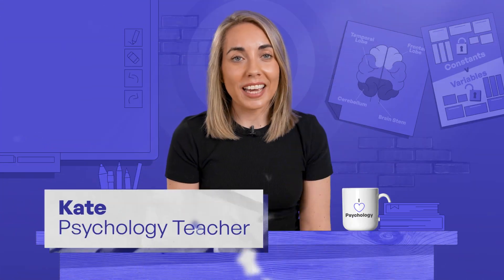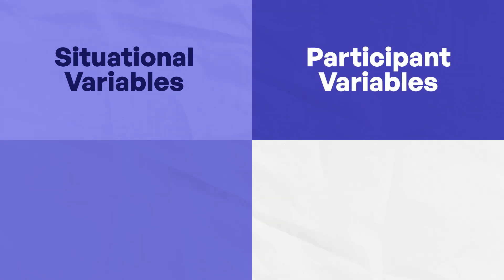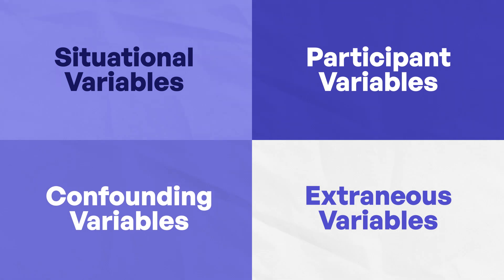Hello and welcome to MBA and another lesson in psychology. You already know that psychologists like to do experiments to test their theories about human behavior, and you probably know about independent variables and dependent variables. But did you know there are a few other variables you need to know about before you conduct an experiment? Today we're going to look at situational variables, participant variables, extraneous variables, and confounding variables.